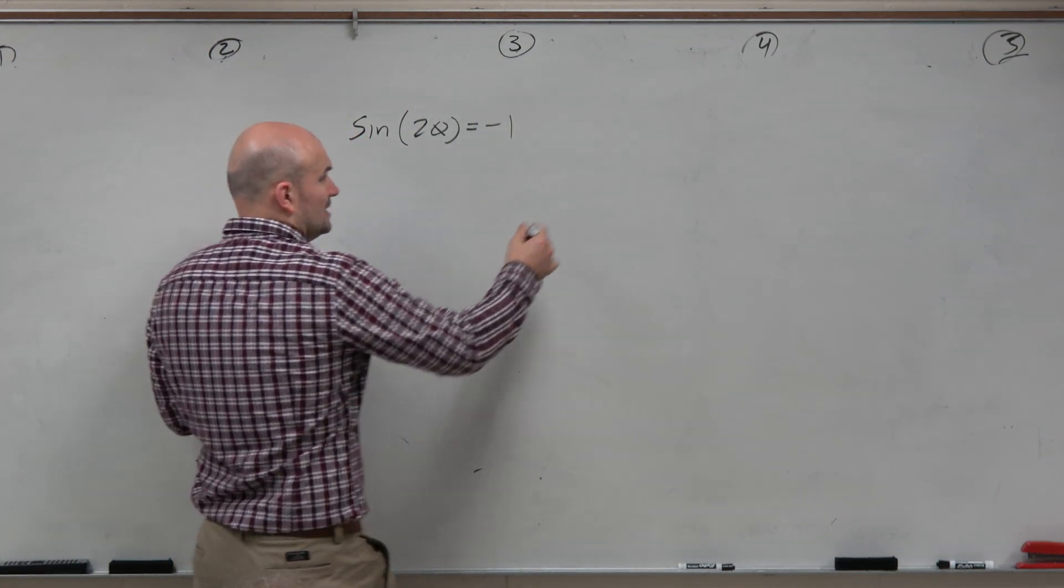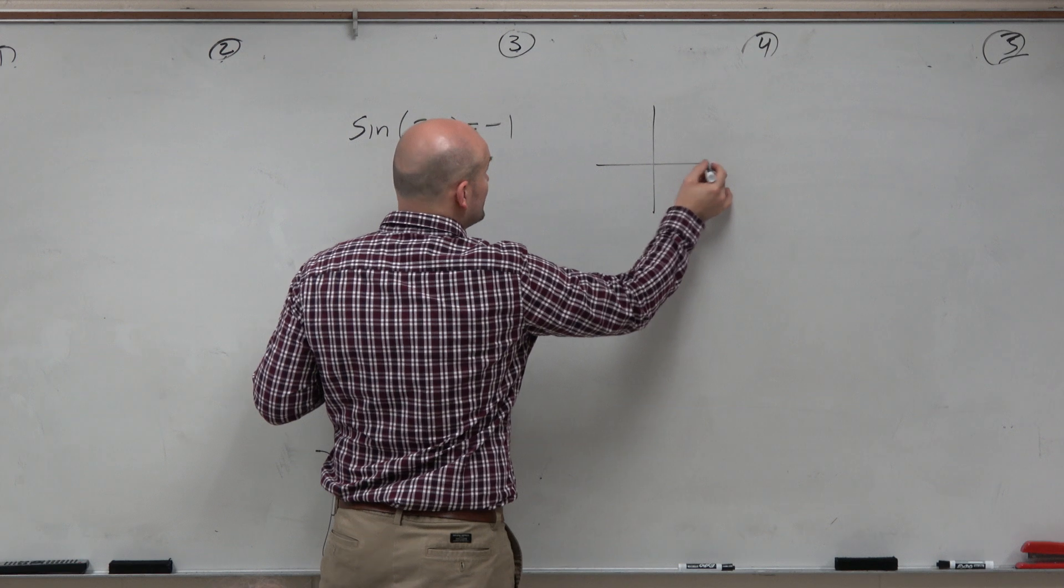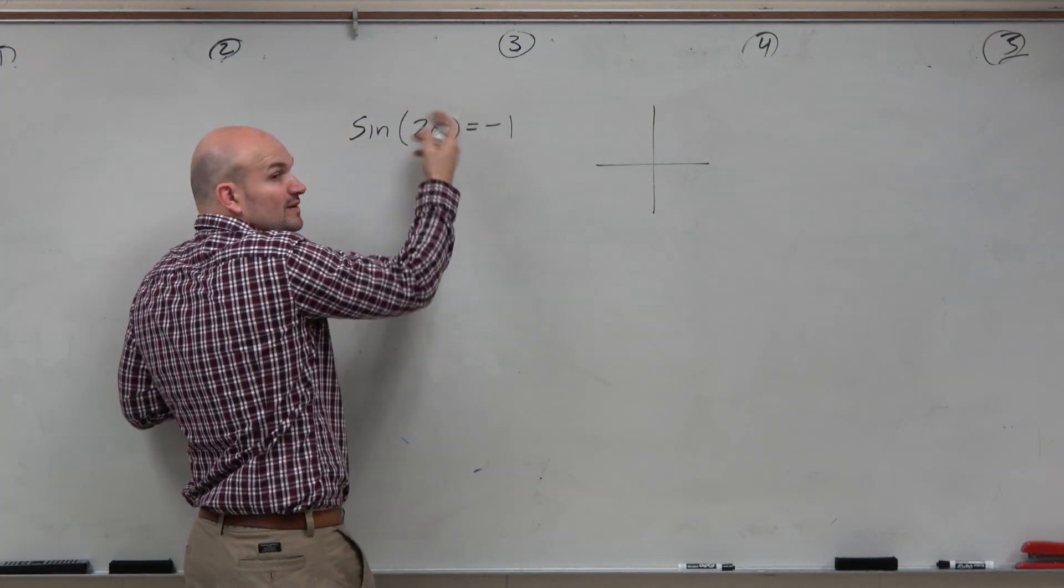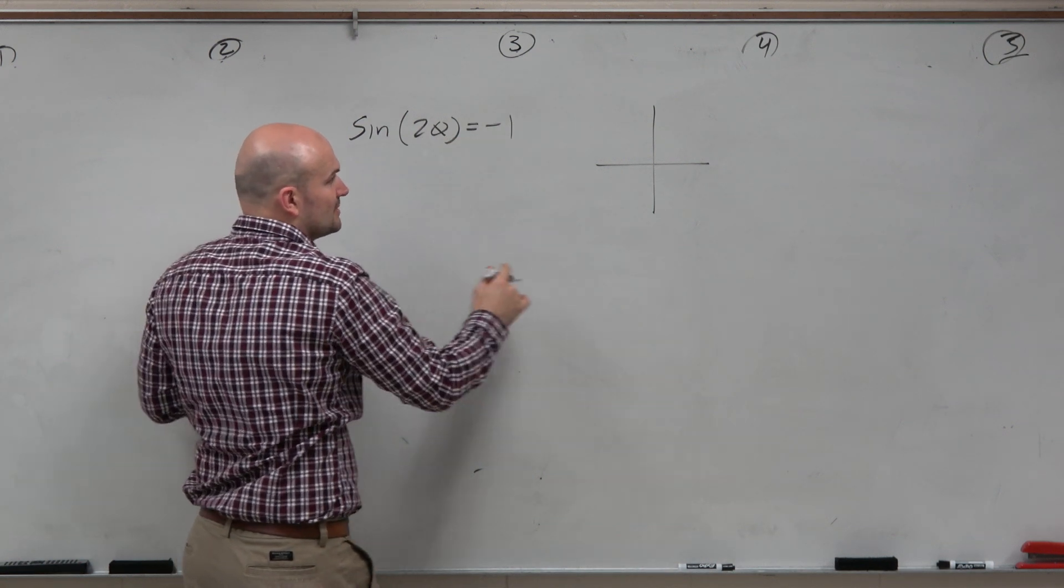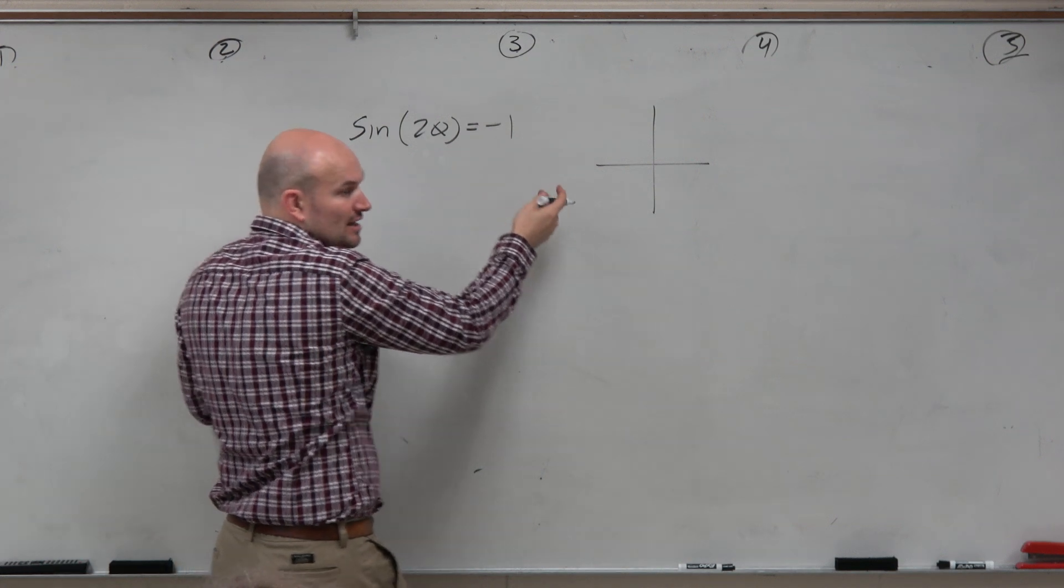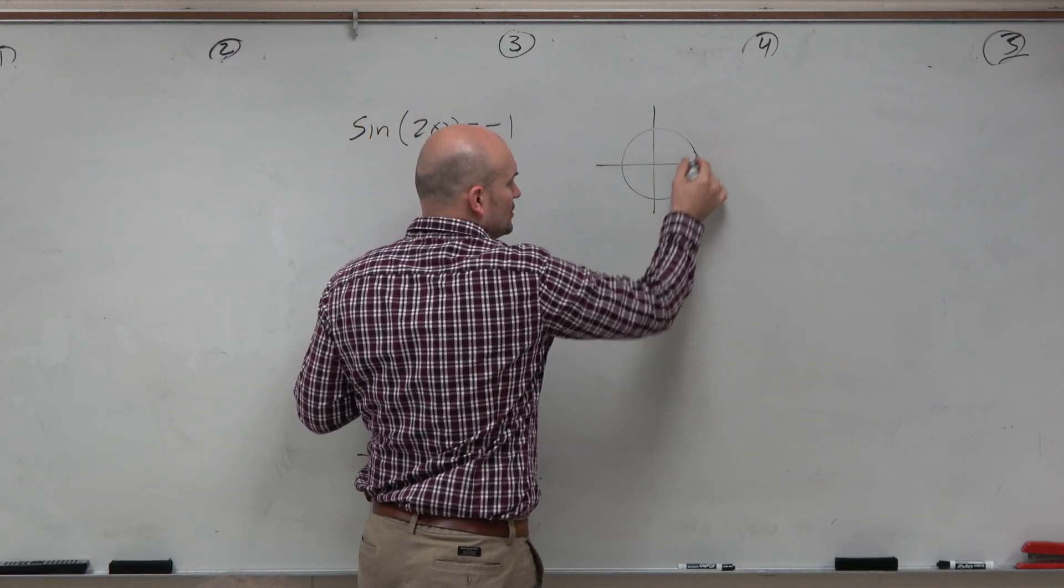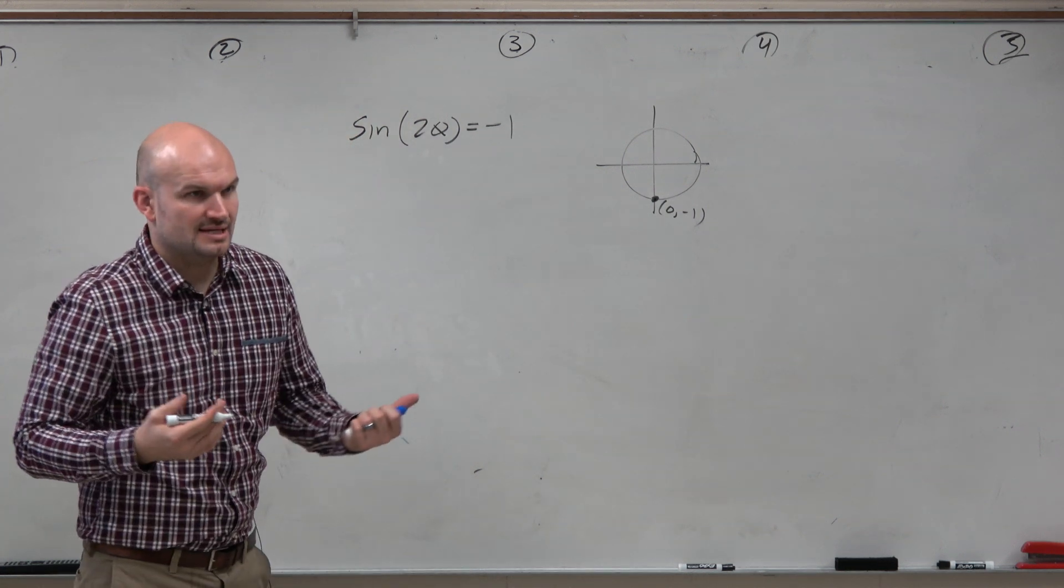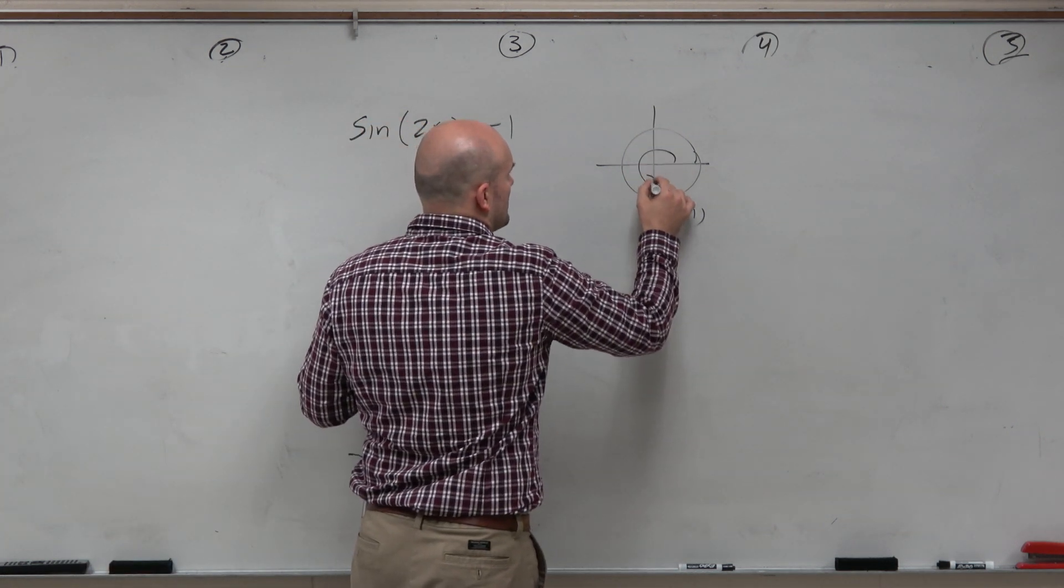So let's look at when is sine of some angle. And sometimes it's helpful to use substitution, like if you want to use alpha there instead. But when is sine of what angle going to equal negative 1? Well, going back to our unit circle, we see here's negative 1. And so therefore, we can see that this angle is 3 pi over 2.